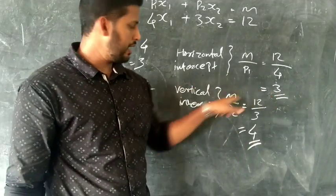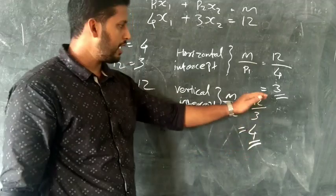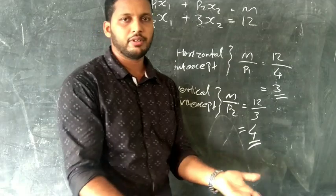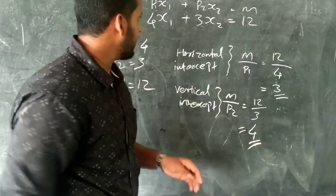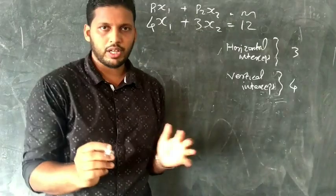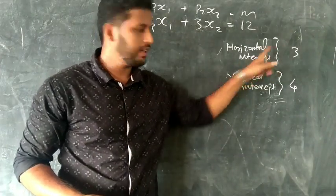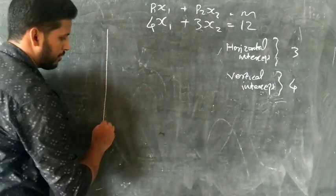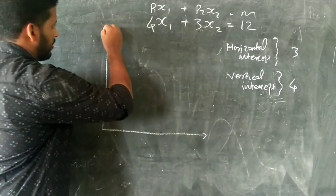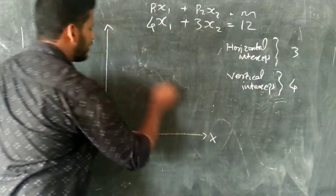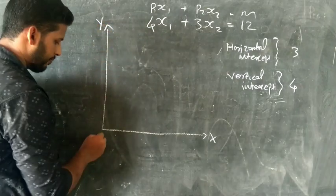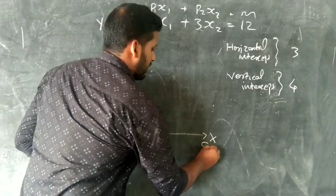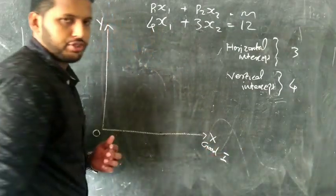Horizontal intercept is equal to 3 and vertical intercept is equal to 4. We can see the graph with X and Y axes. The origin is at 0.